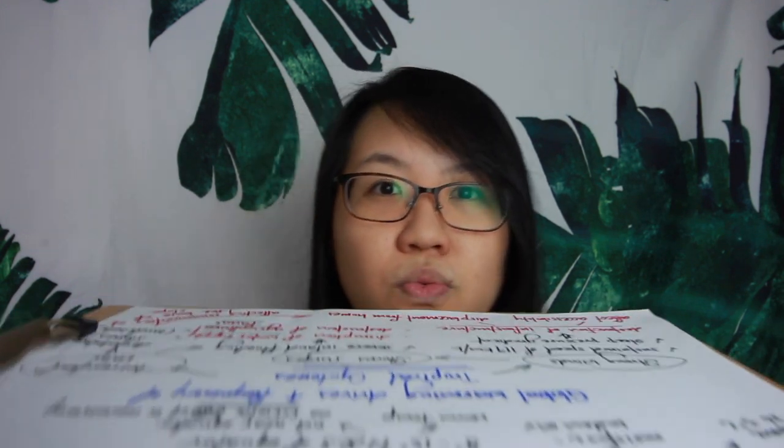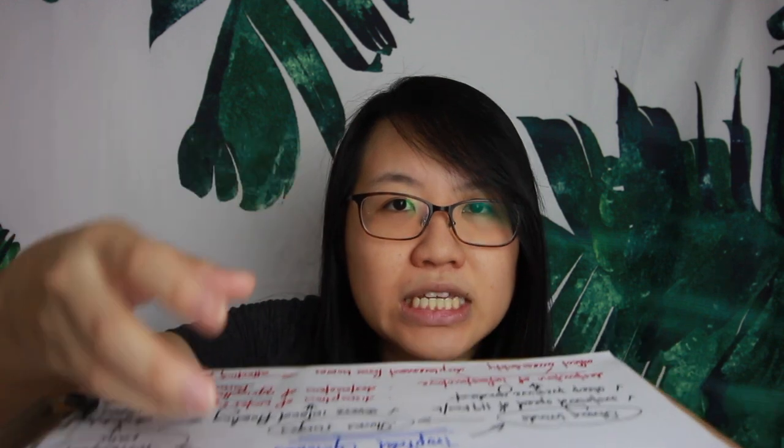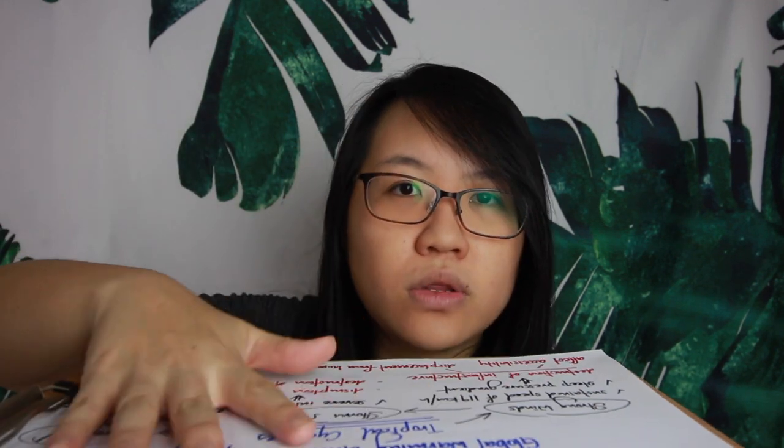Now let's look at how tropical cyclones are formed — this is not within the syllabus but good to know. Visualize a warm ocean surface between 8 and 15 degrees north of the equator. As the warm air above this ocean surface is heated up, it expands and rises, leaving behind a zone of low pressure. Air from the surrounding environment then moves into this low pressure system.